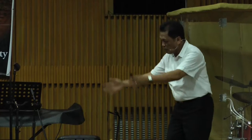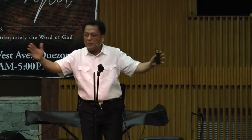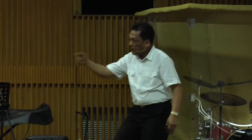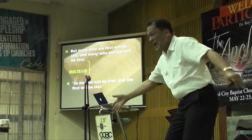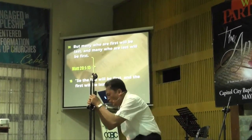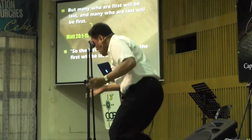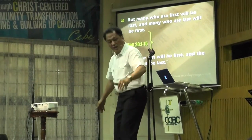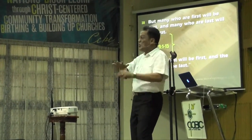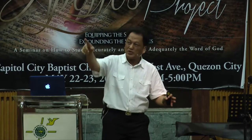Justice and mercy travel the same road — where justice ends, mercy begins. In God's redemptive plan, where does God's justice end? Where was God's justice poured? At the cross of the Lord Jesus Christ. All of us, before reaching that cross, are still under justice — you get what you deserve. But once you reach the cross and recognize Christ as your only Lord and Savior, you are now under mercy.